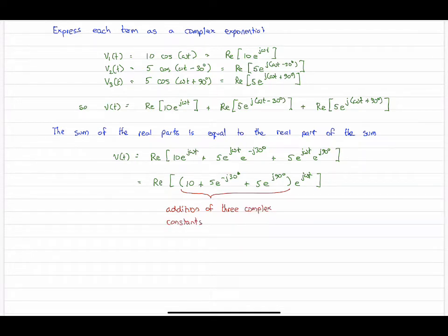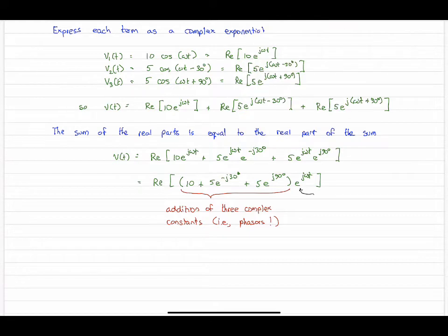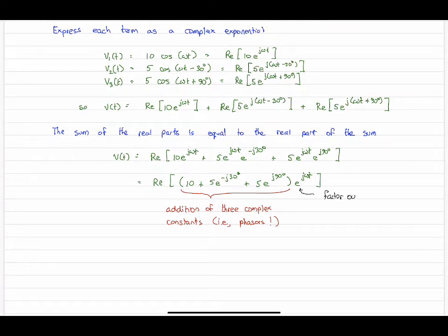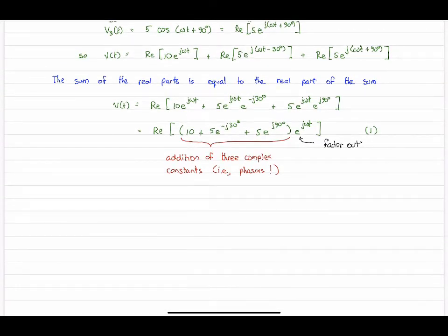This represents the addition of three complex constants, so phasers. And this is the factor that we factor this term out. It's what's in between the parentheses here that is basically our answer. So let's proceed from there.